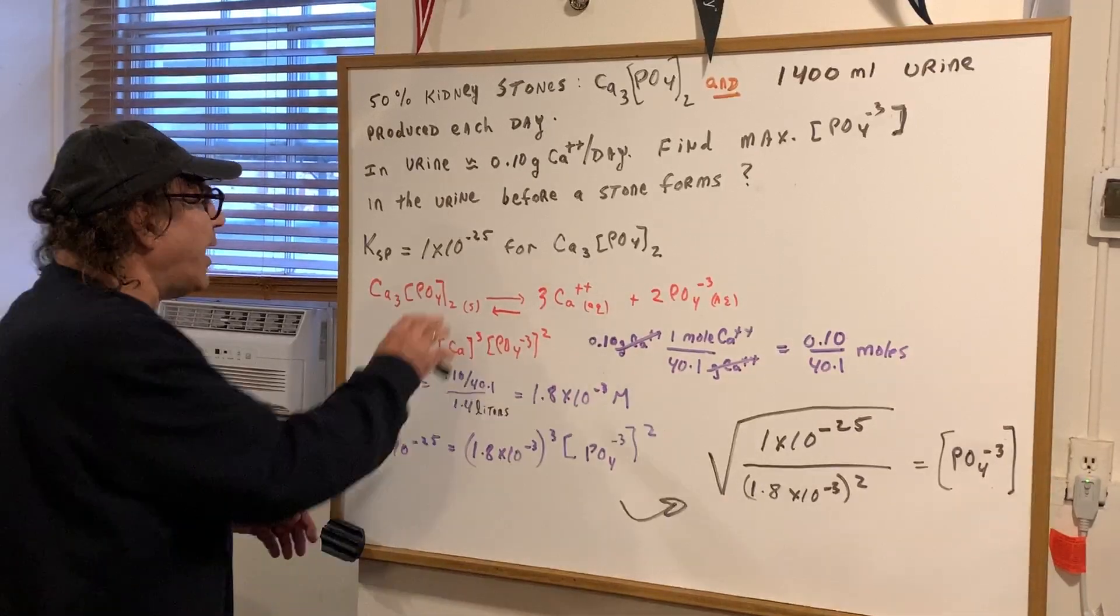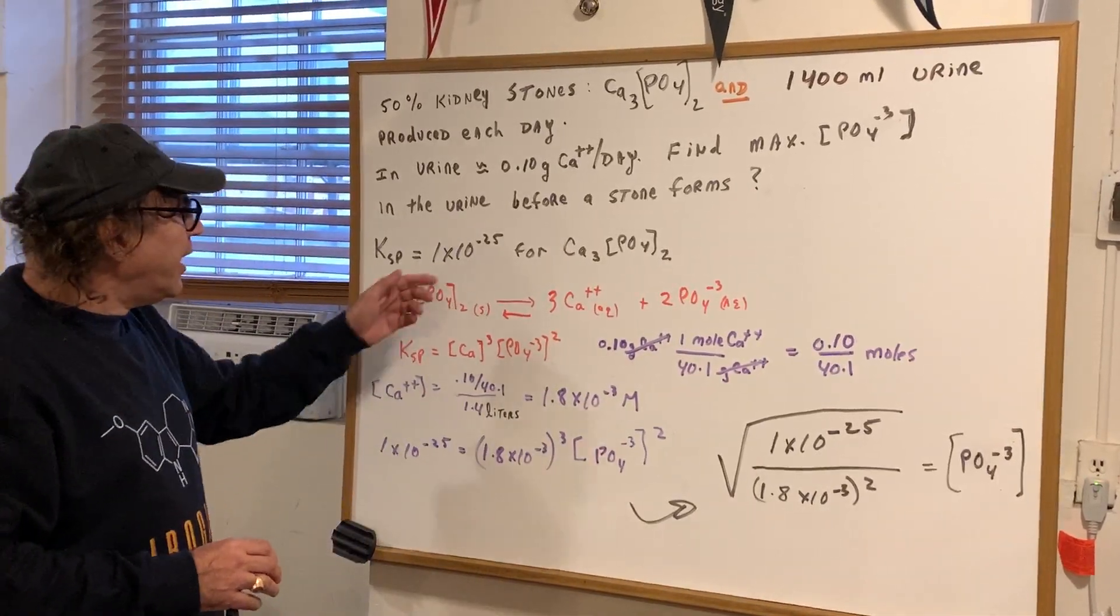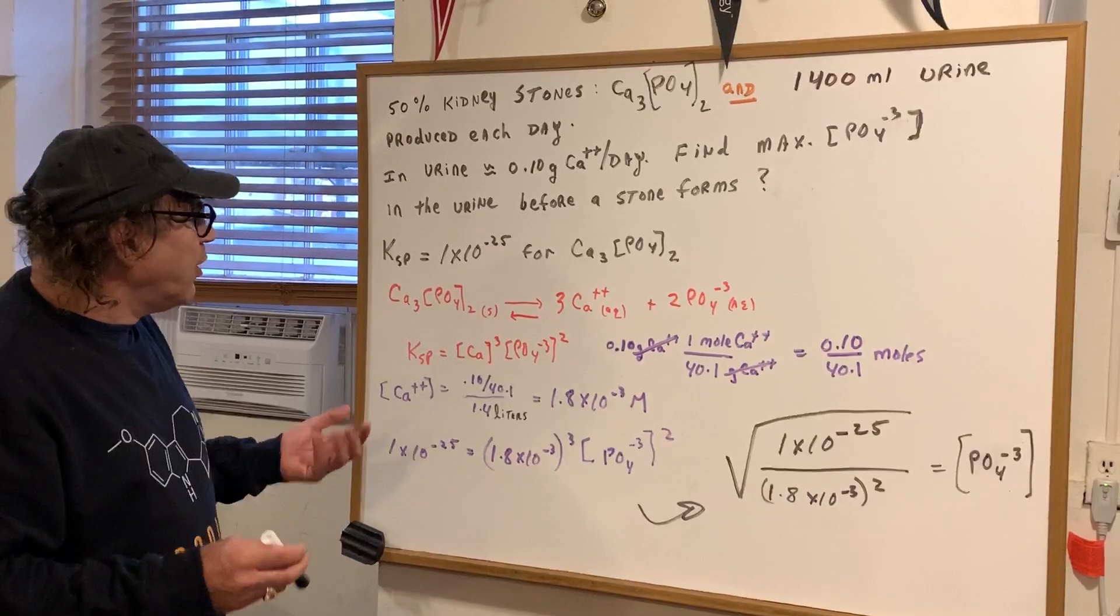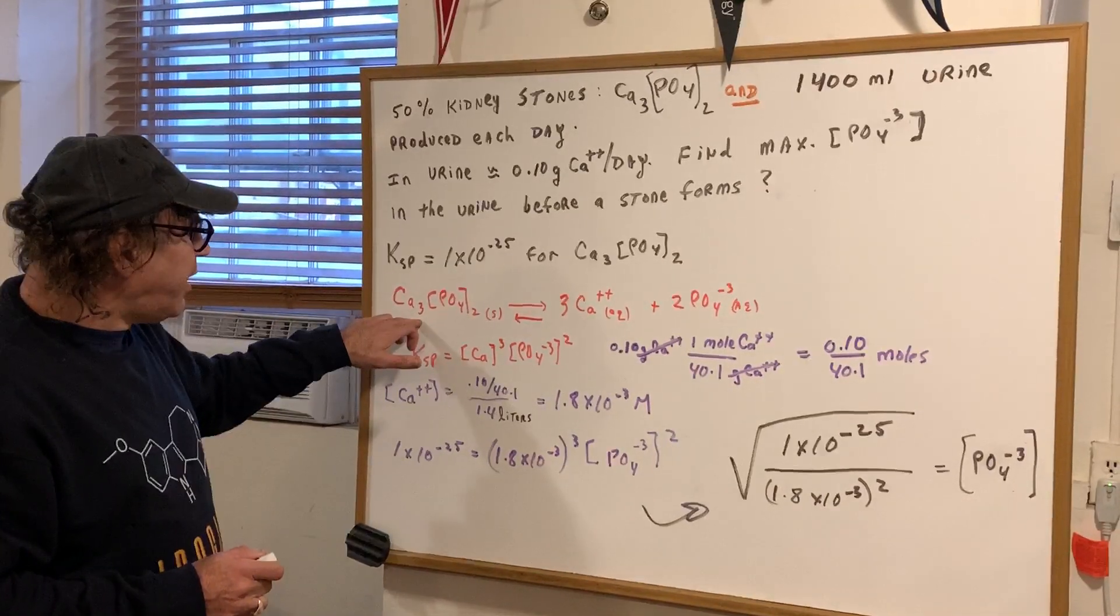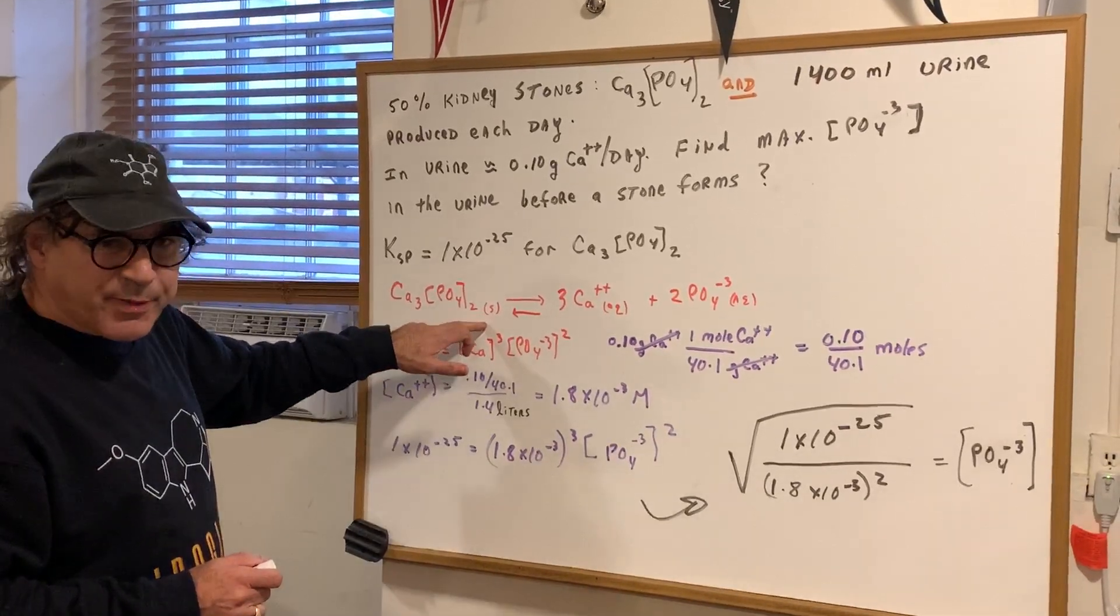All right. And I gave you the KSP for calcium phosphate. It's 1 to the minus 25th. Where would I even start this? Well, since I gave you the KSP, we're going to write the KSP expression.